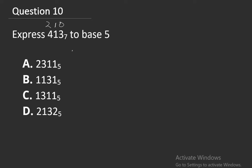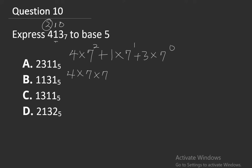Converting 413 base 7 to base 10: 4 times 7 squared plus 1 times 7 to the power 1 plus 3 times 7 to the power 0. This gives 4 times 49 plus 1 times 7 plus 3 times 1. That is 196 plus 7 plus 3 equals 206 base 10.